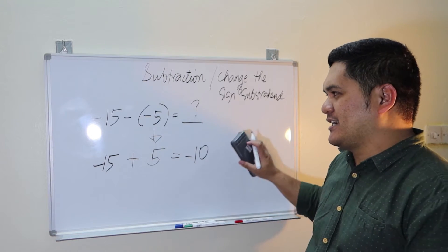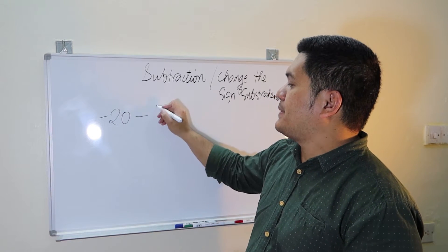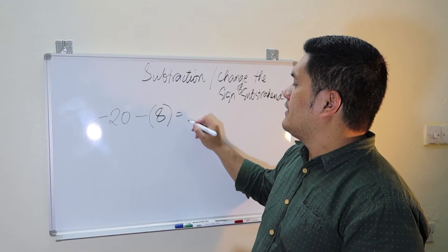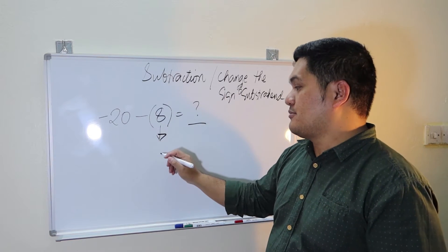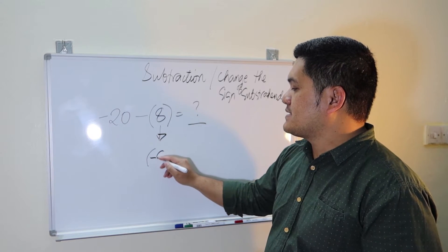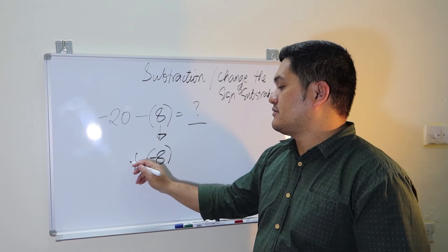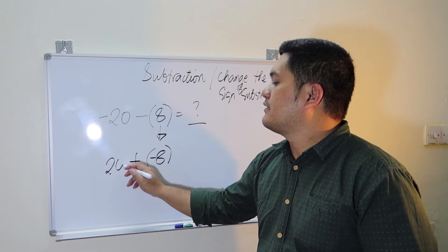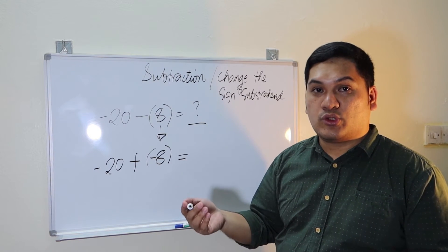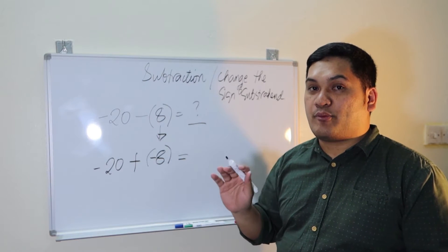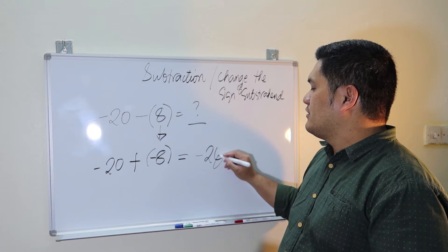Another example: negative 20 minus positive 8. First, change the sign of the subtrahend — positive 8 becomes negative 8 — then proceed to addition. Negative 20 plus negative 8 both have the same negative sign. In addition, when they have the same sign, you add the two numbers and follow the sign. So the answer is negative 28.